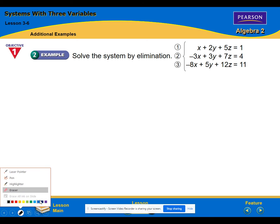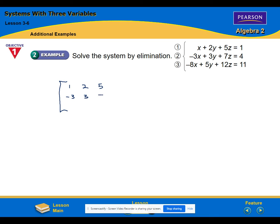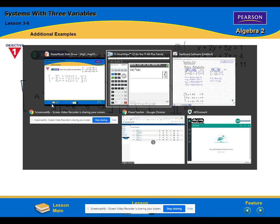So here we have, make that a little bigger. One, two, five, negative three, three, seven, negative eight, five, 12. A variable matrix of X, Y, and Z. It's equal to a constant matrix of one, four, 11. And then we need to show A inverse. We'll always just use the same two matrix letters on your calculator. We'll just overwrite the numbers. A inverse. This is the entire setup. Then we jump over to the calculator and we're going to enter all that information.